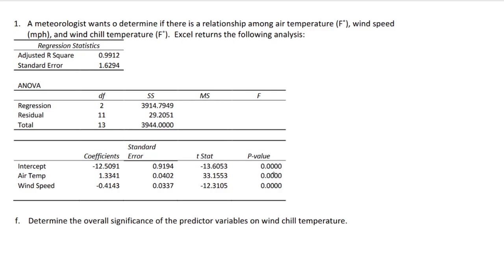This is actually the most challenging part of the question: determine the overall significance of the predictor variables on wind chill temperature. The R-squared gives you how much of the variation is explained by the regression analysis. But you might also consider the question of how much you can trust this result. That has to be calculated by using the F distribution.